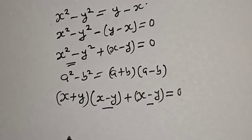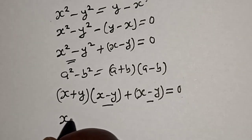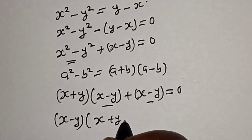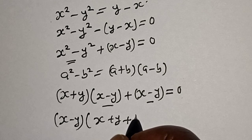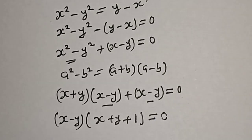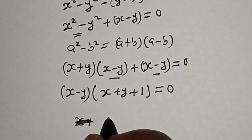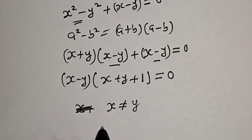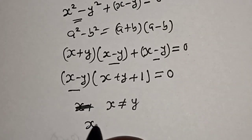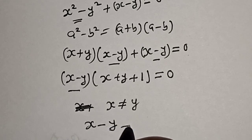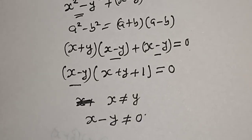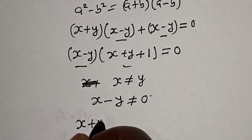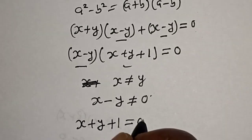So x square minus y square equals x plus y times x minus y, giving us x plus y times x minus y plus x minus y equals 0. Now x minus y is common — let's bring it out. We have x minus y into x plus y plus 1 is equal to 0. Now there are two cases here, but remember that x is not equal to y.